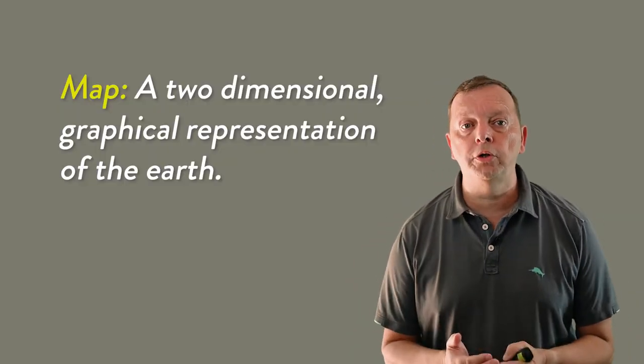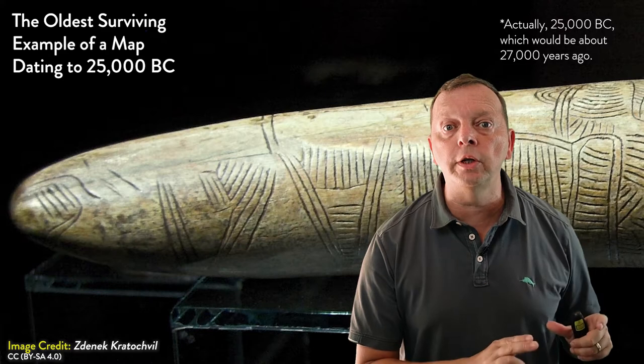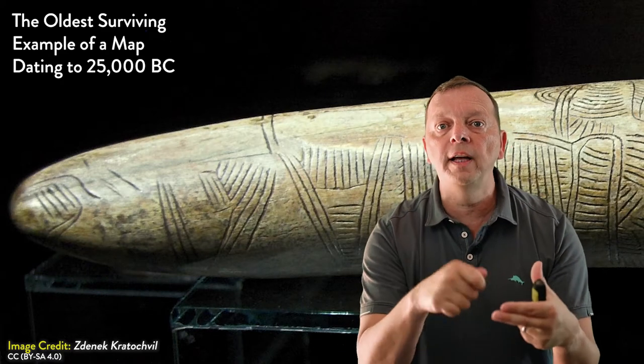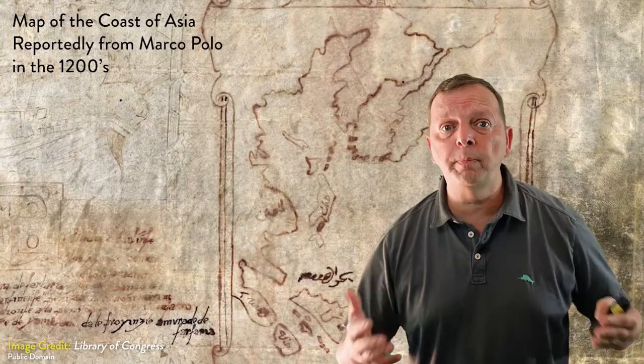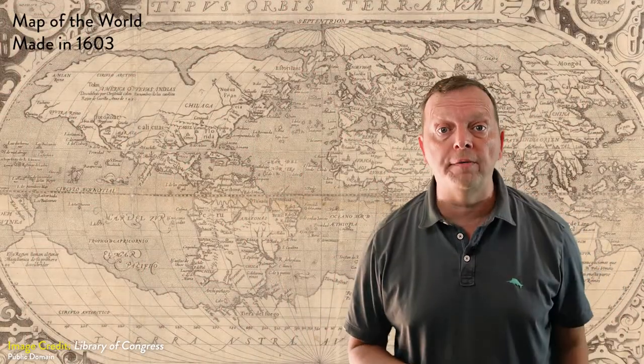In this lesson, I'm going to go over what is probably the most important tool that geographers use, maps. A map is a two-dimensional graphical representation of the Earth, and the first maps date all the way back 25,000 years ago when someone took a mammoth tusk and started to carve in their surroundings on it. Since that time, mankind has not only continued to expand their knowledge of the world around them, but how they are able to portray that round world onto a flat map.